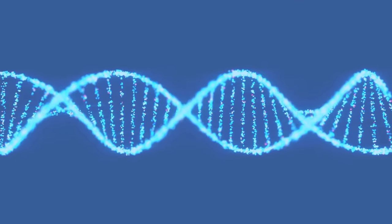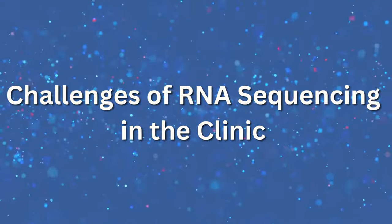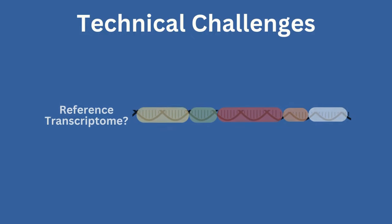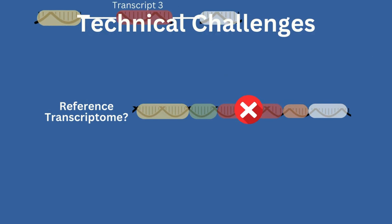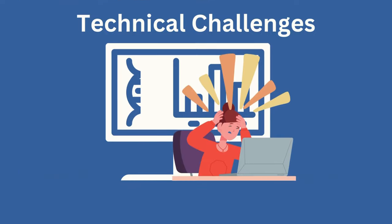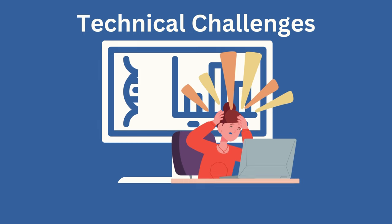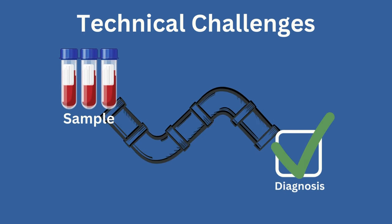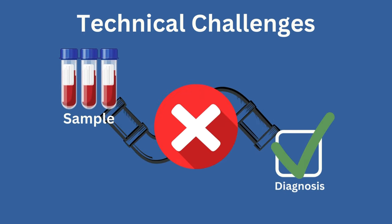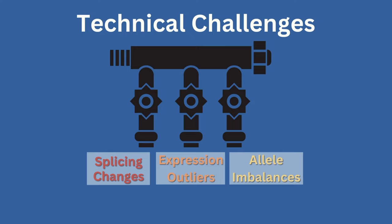Despite the clear range and clinical power of RNA sequencing, it is not widely implemented in clinical labs to date. Analysis of RNA sequencing data is technically challenging. With no universal reference transcriptome, difficulties prioritizing variants and candidate genes, and complicated interpretations, among other technical issues, RNA sequencing struggles to become routine in clinical practice. For these reasons, there is currently no universal or optimal analysis pipeline for all the previously mentioned uses of RNA sequencing, adding further complications.